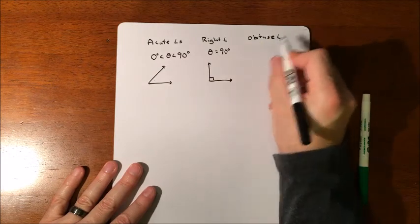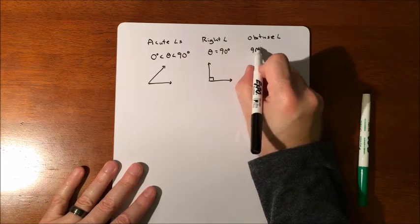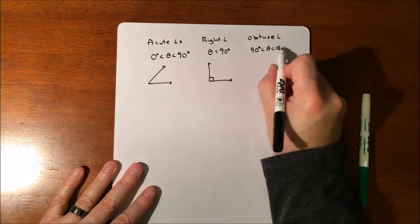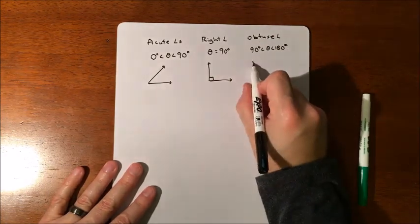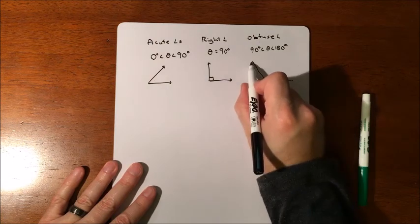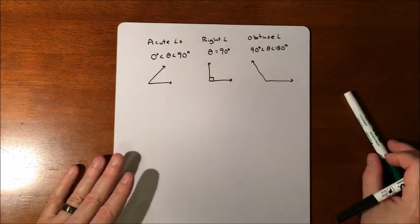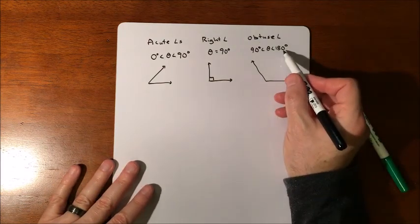Obtuse angle. So an obtuse angle is something between 90 and 180. So kind of a bigger angle. Bigger than 90 is typically kind of how you'll hear it. But it does have a restriction that it's going to be less than 180.